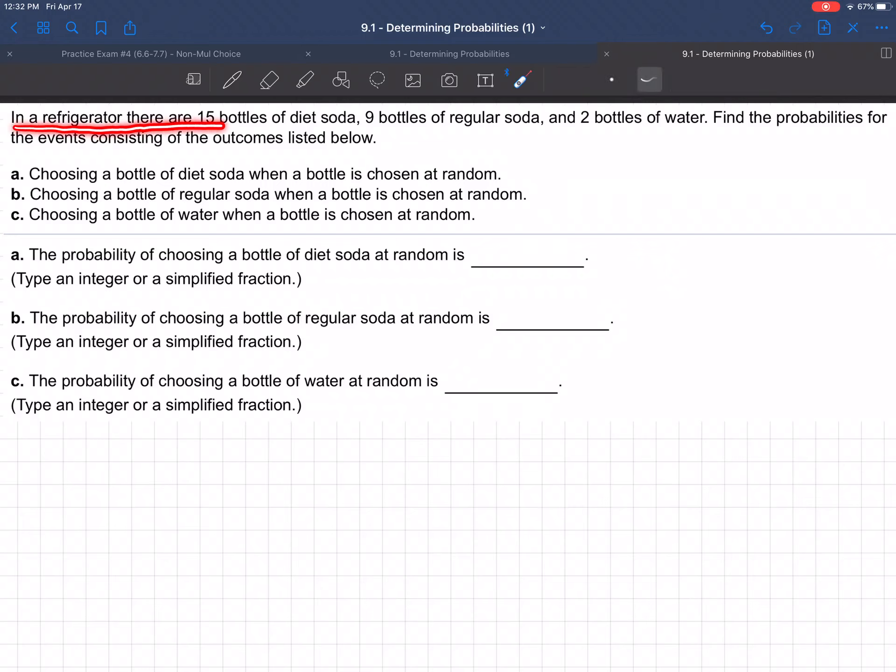In a refrigerator, there are 15 bottles of diet soda, 9 bottles of regular soda, 2 bottles of water. Find the probabilities for the events consisting of the outcomes listed below.